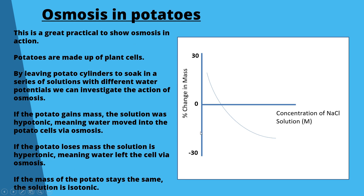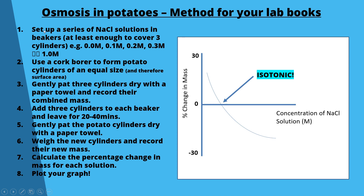We plot a graph of percentage change in mass against concentration of sodium chloride — from zero to one molar or in steps of 0.1 molar. Where the curve bisects the x-axis is the isotonic point: the potato cells are neither gaining nor losing mass. To set up, prepare a series of sodium chloride solutions in beakers — at least enough to cover three potato cylinders — covering concentrations from 0 to 1 molar.